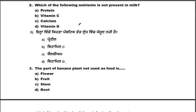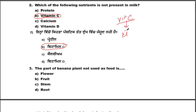We call it a balanced diet. We are aware that milk has almost all nutrients. But one nutrient is not available in milk — vitamin C is not present in milk. This is why vitamin C is the answer.